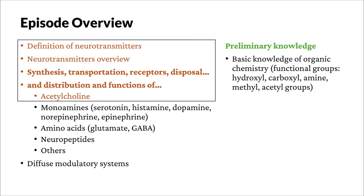In this episode, we will first define what neurotransmitters are, then have an overview of neurotransmitters. Their characteristics include their synthesis pathways, their method of transportation, their receptors, their disposal mechanisms, their distribution in the human body, and their functions. In this episode, we are going to focus on acetylcholine, and take a look at the rest of the neurotransmitters in the next episode.